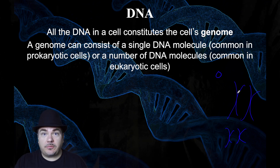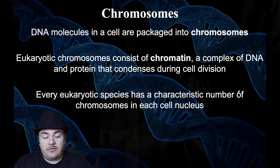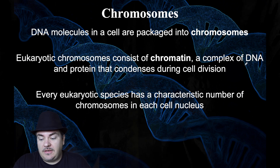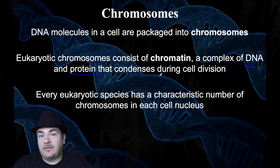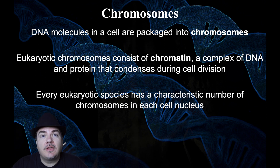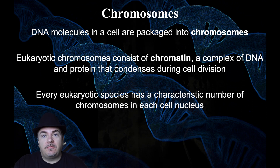DNA molecules are packaged into a cell in chromosomes. Eukaryotic chromosomes are made up of chromatin — chromatin is DNA with proteins attached to it. Those proteins help the DNA condense or coil during cell division. Every species has a characteristic number of chromosomes. Humans, with some rare exceptions, have 46 chromosomes. Not all living things have 46 chromosomes — for example, a fruit fly has 8 chromosomes, and all fruit flies have 8 chromosomes.